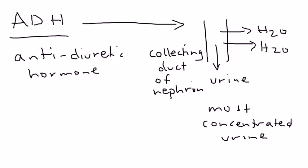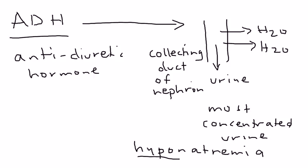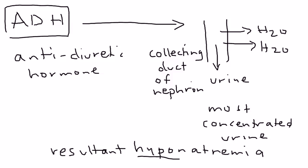Because more water returns to the bloodstream, the blood becomes more dilute, resulting in hyponatremia. There is more water and less solute — namely sodium — so the blood has less sodium because the water has diluted it. This is the basic functionality of ADH. In this scenario, the patient has a lung cancer — bronchogenic carcinoma.